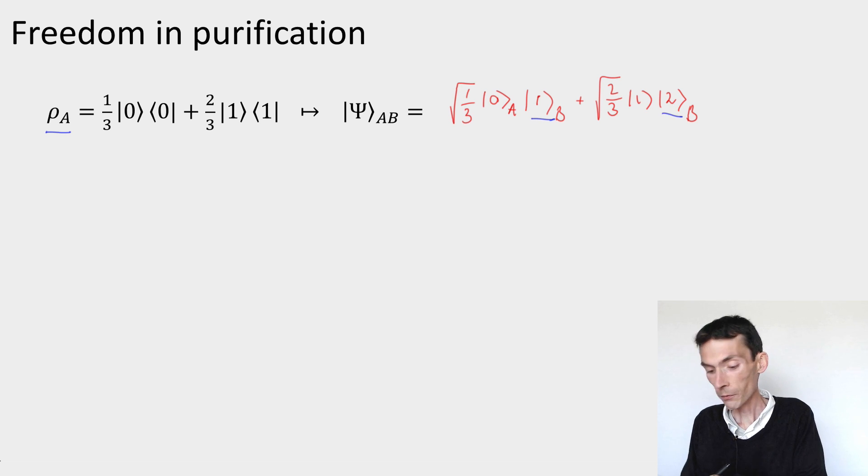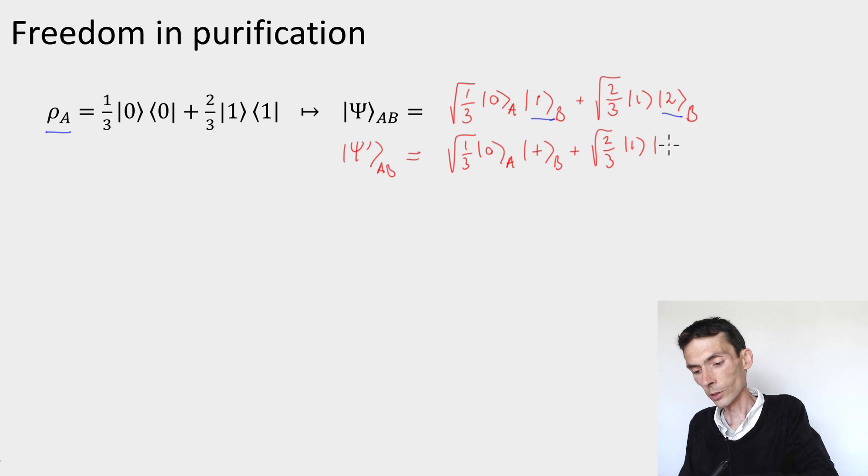I could have given you a different purification of the same density matrix. State ψ'_AB could be defined as √(1/3)|0⟩ on A, and maybe if I feel fancy today I'll use the Hadamard basis, |+⟩_B, and then √(2/3)|1⟩, put a |−⟩ on system B.